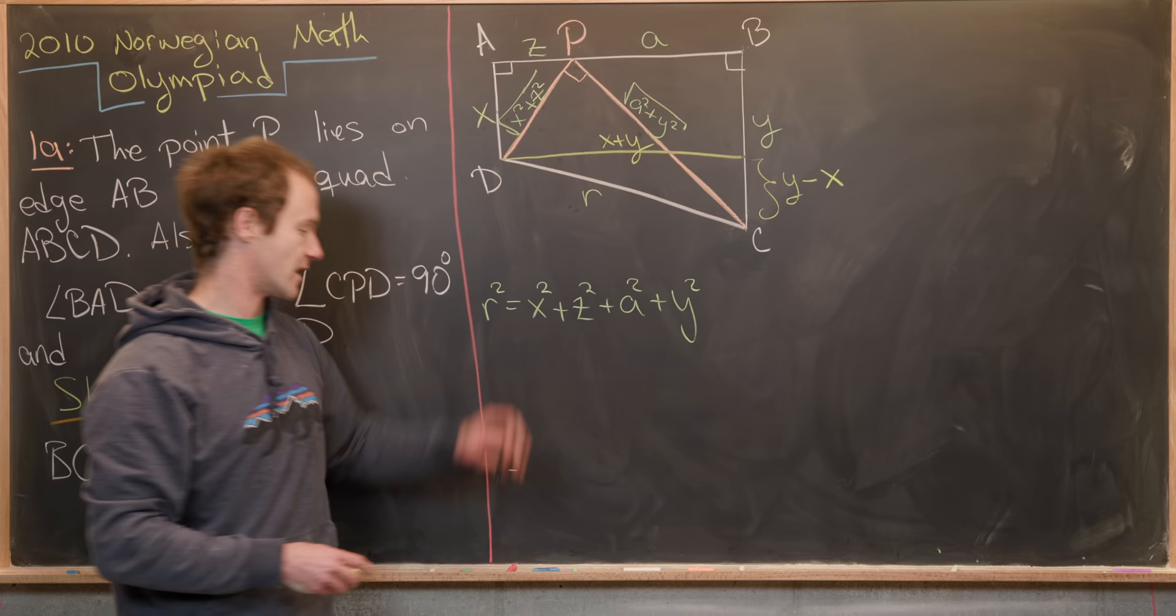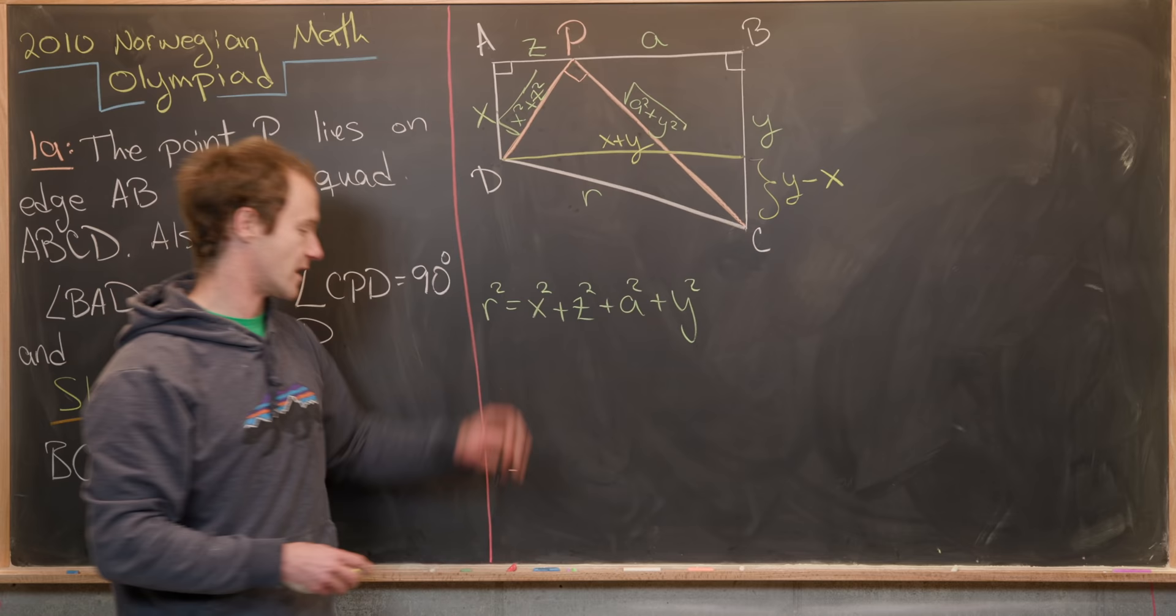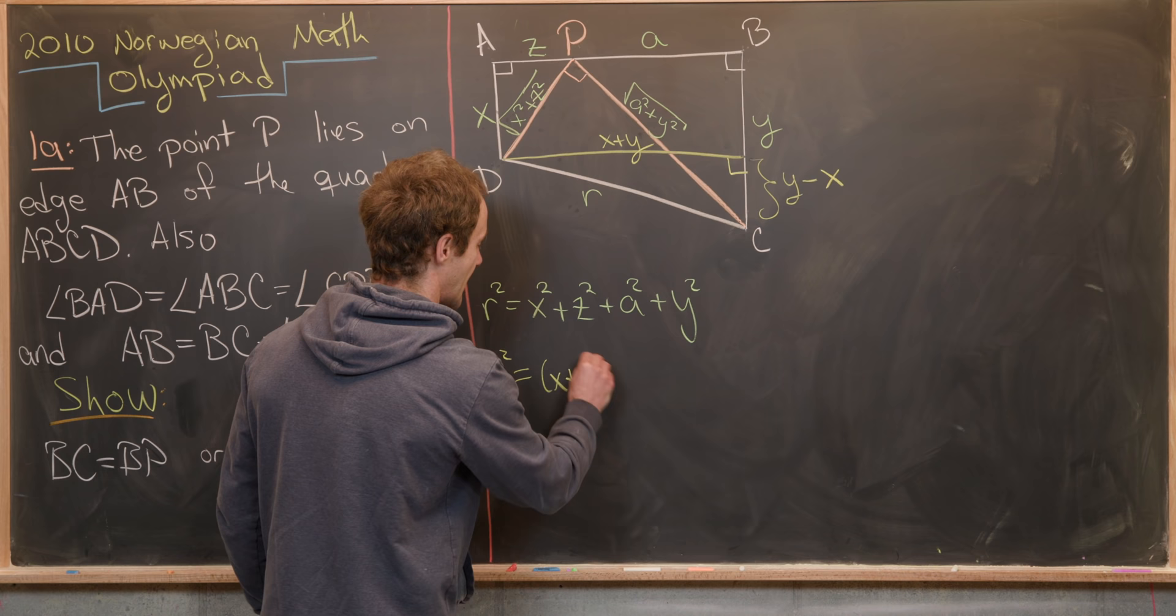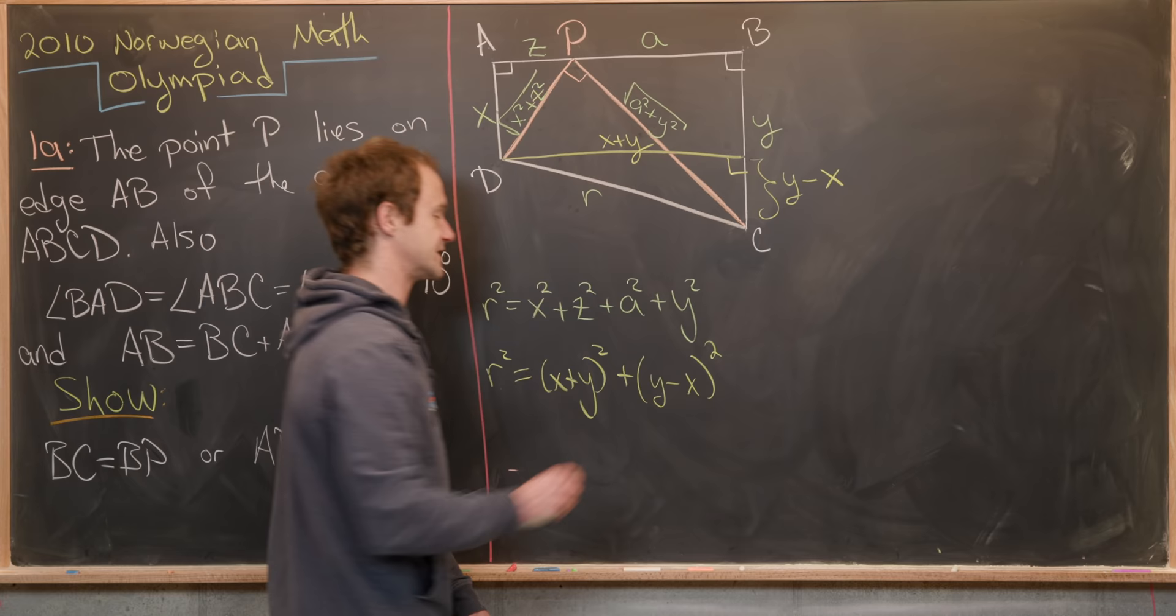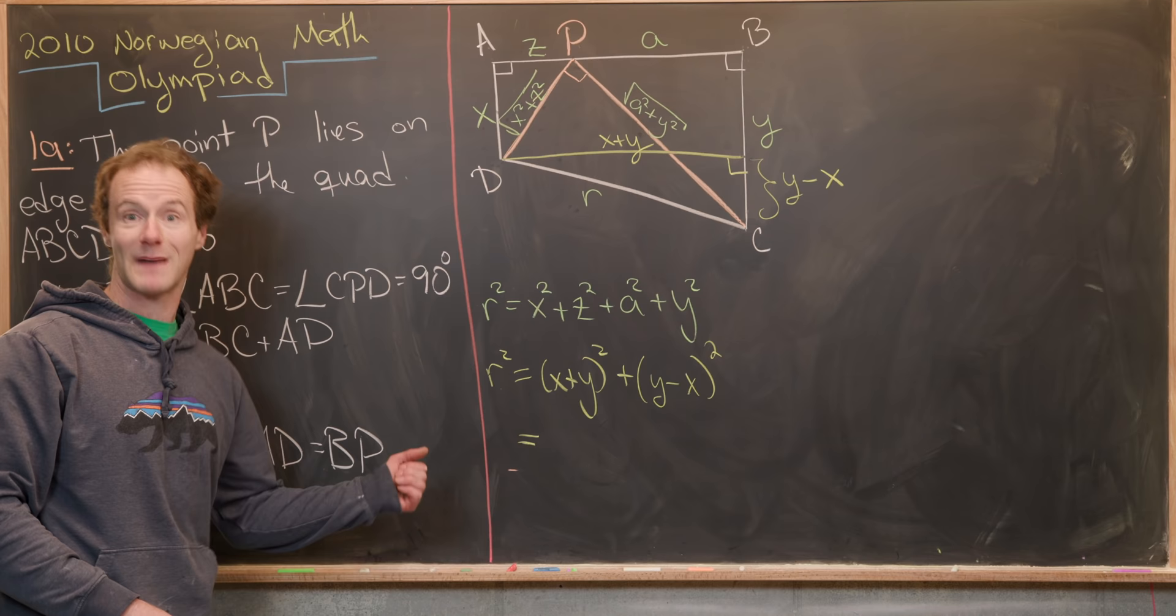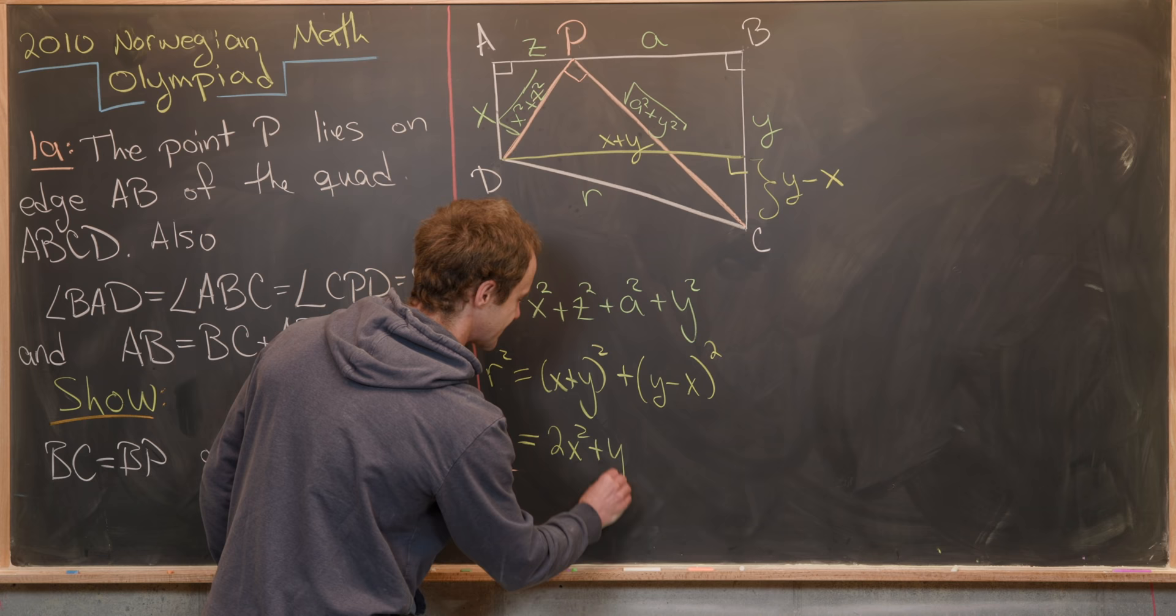Then this edge up here from D to this point has length Z plus A, but it also has length X plus Y from this equation right here. So maybe we'll use length X plus Y, you know, just because I think it's a little easier to work with. Now we can calculate R squared using the fact that we've introduced another right triangle into this situation. So we also have R squared equals X plus Y quantity squared plus Y minus X quantity squared like that. So let's see how that simplifies. So multiplying this out, we'll get X squared plus 2XY plus Y squared. Here we'll get X squared minus 2XY plus Y squared. So in the end, we'll have 2X squared plus 2Y squared.